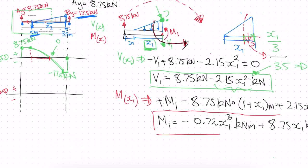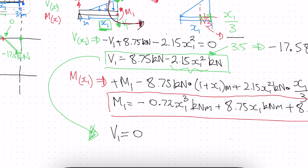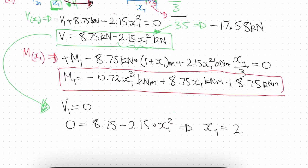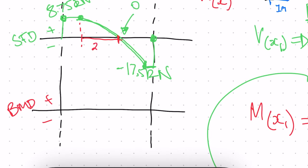To find where shear equals zero, we set V1 = 0: 0 = 8.75 − 2.15·x1², solving for x1 gives x1 = 2.02 meters. So the shear is zero at 2.02 meters along this section. Since we already know the first segment is one meter and the last segment is 0.5 meters, the remaining distance works out to 1.48 meters. The point where shear is zero is also where the maximum bending moment occurs.